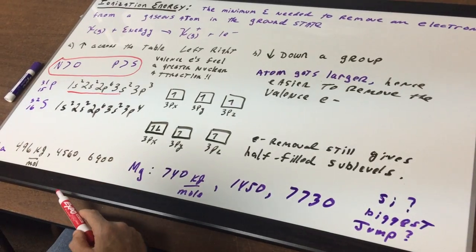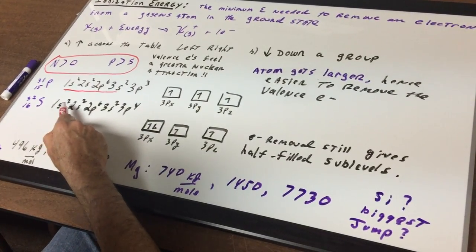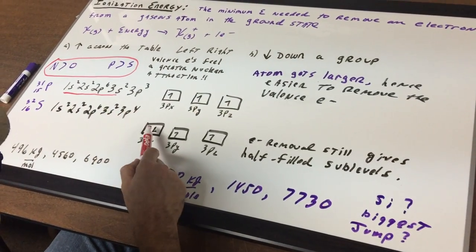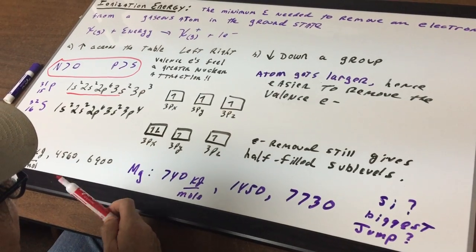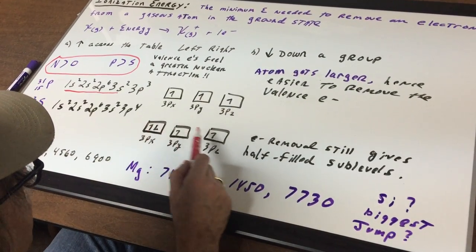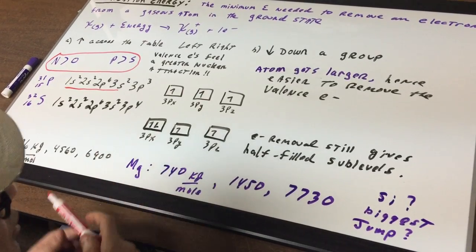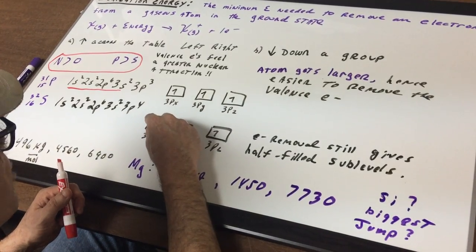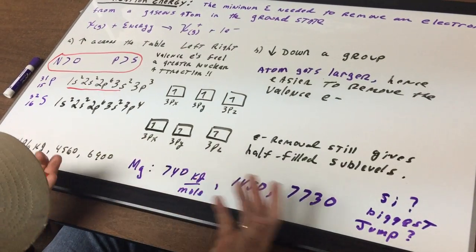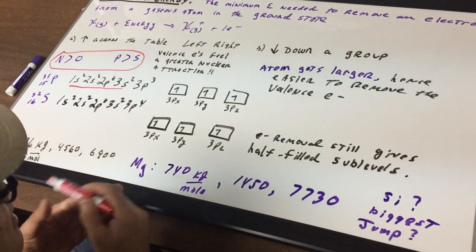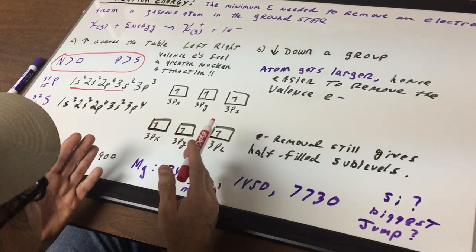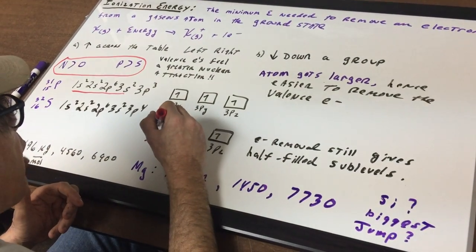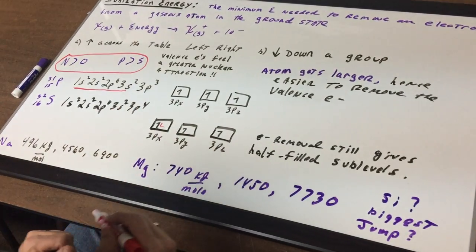When we do the same thing to sulfur and we wrote out the configuration of 1s2, 2s2, 2p6, 3s2, 3p4, you draw your three boxes again for the 3p orbitals, one in each and then you go back by Hund's rule and I'm hoping you can see that if you remove one electron, say we remove this electron from here, you would still get half filled sub levels. So it's not decreasing the stability as much as if you would remove from here. So this one would be a little bit easier to remove.